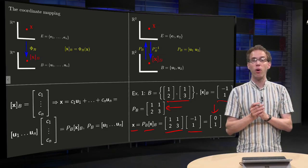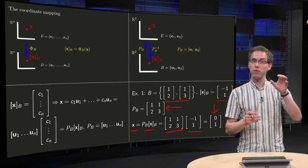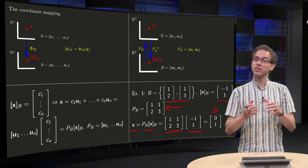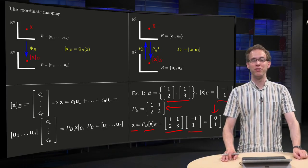So coordinate mappings from Rn to Rn are implemented by matrix PB, and it is really easy to find this matrix as you saw in this video.